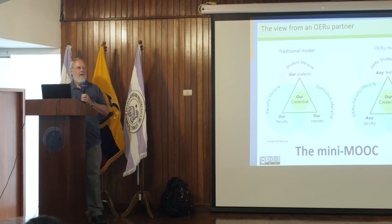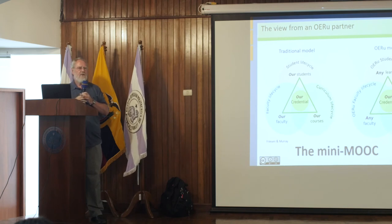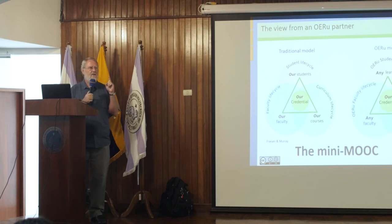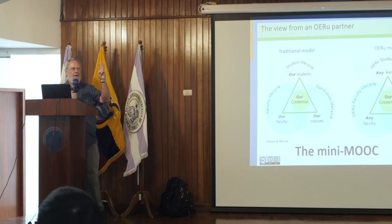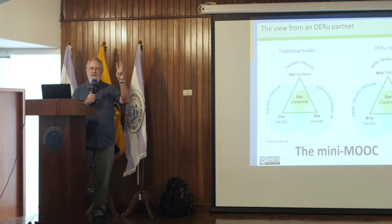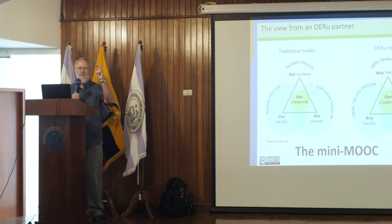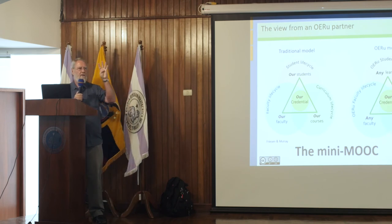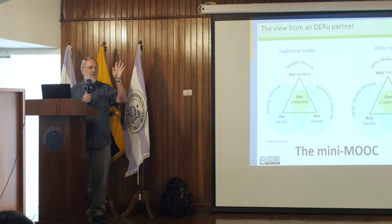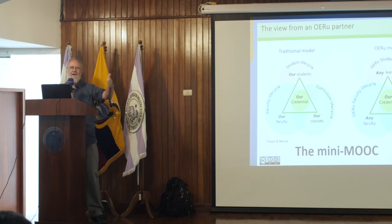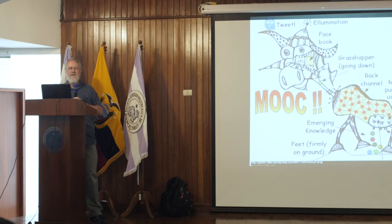We call our approach the mini MOOC, where we've divided all of our courses into one-credit modules, because credits vary around the world: three credits in America and Canada, four in Australia, five in the UK for one course. So we've divided it into modules so people can get their accreditation recognized.